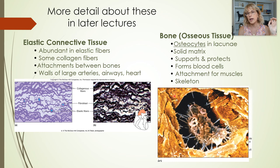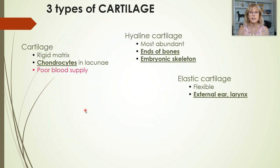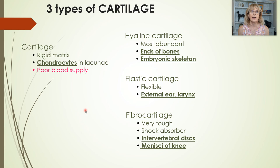Going back to the osteocyte — the little cave it lives in is also known as a lacuna. Since the matrix is solid, cells need to live in little hidey holes inside of it. The fibrocytes that live in tendons and ligaments don't need caves because their matrix is semi-fluid, but in cartilage the cells live inside lacunae as well. Cartilage has poor blood supply, which is why wear and tear or injury to knee cartilage just doesn't heal very well. Some people say cartilage doesn't heal at all — that's probably not true, but it certainly doesn't heal anywhere near as well as bone.